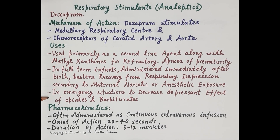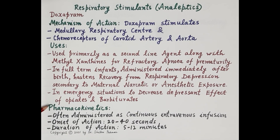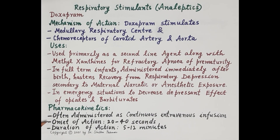Apart from this, in emergency situations like poisoning, doxapram decreases the respiratory depressant effect of opiates and barbiturates. Regarding the pharmacokinetics of doxapram: it is often administered as a continuous intravenous infusion. Its onset of action is 20 to 40 seconds, while its duration of action is 5 to 12 minutes.